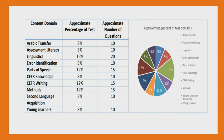Let's see the domains of the exam and the approximate percentage and number of questions for each. Your first domain is Arabic transfer, with 8% weightage and 10 questions. Next is assessment literacy — again 8% and 10 questions. Linguistics is 16% with 20 questions. Error identification has a smaller percentage, but trust me it is a very interesting and easy section — you can easily score those 10 marks.